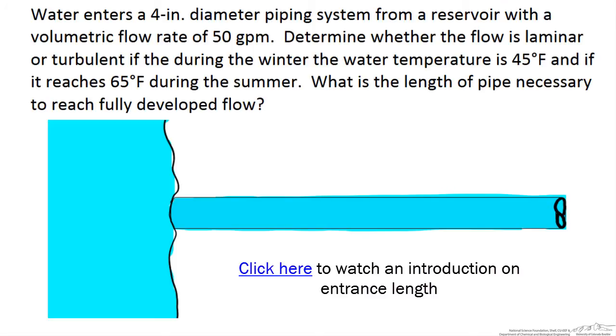In this screencast, we're going to work through an example problem in which we calculate the entrance length to reach fully developed flow. Here we have water that enters a 4-inch diameter piping system from a reservoir with a volumetric flow rate of 50 gallons per minute.